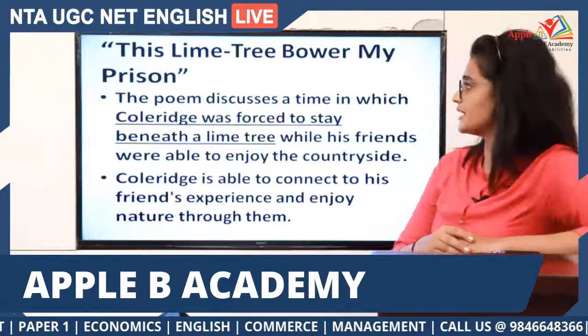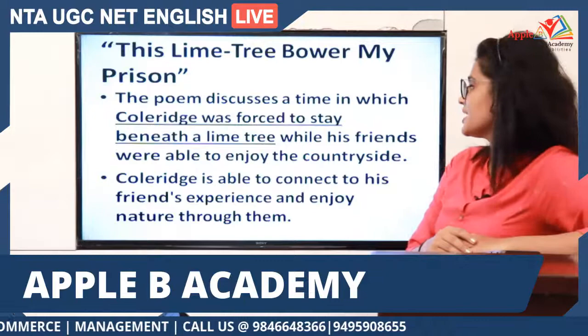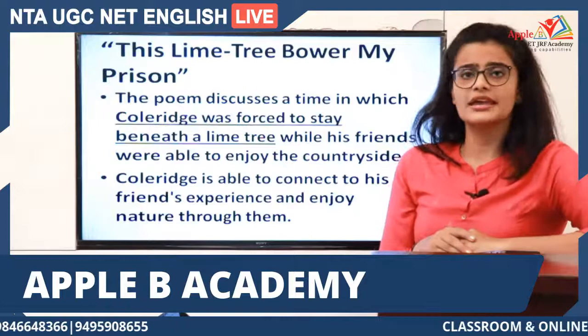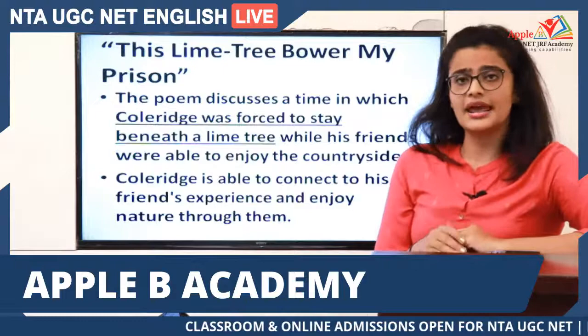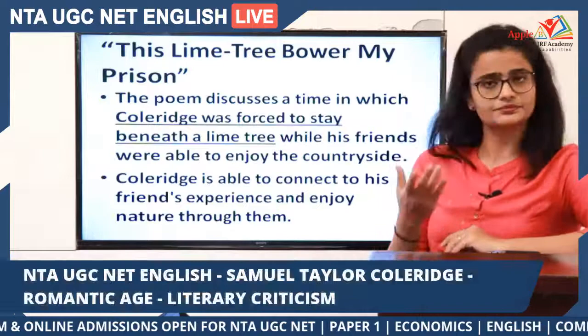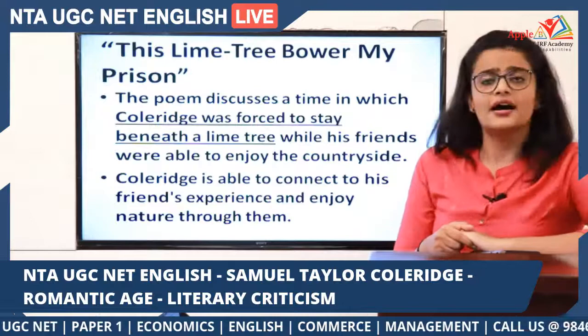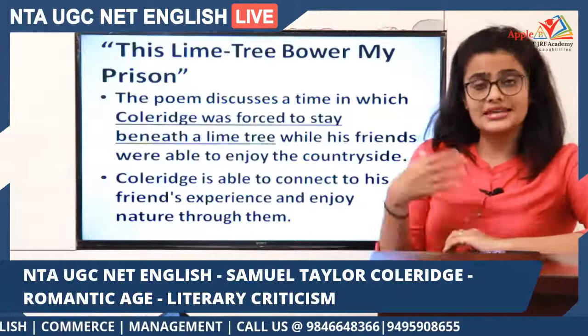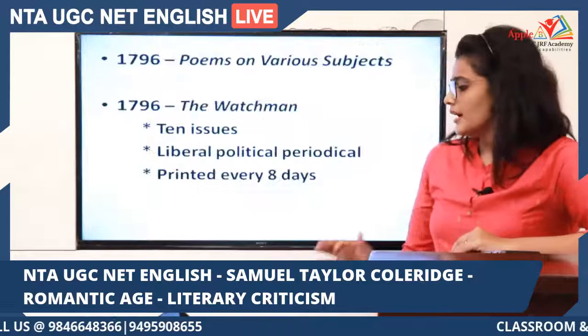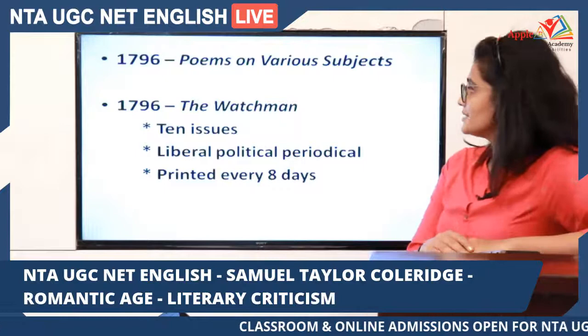This Lime Tree Bower My Prison discusses a time when Coleridge was forced to stay beneath a lime tree while his friends were able to enjoy the countryside. Though the poem starts in a negative manner, Coleridge ultimately finds he is able to connect with nature just as his friends could, celebrating nature's presence even within confinement.